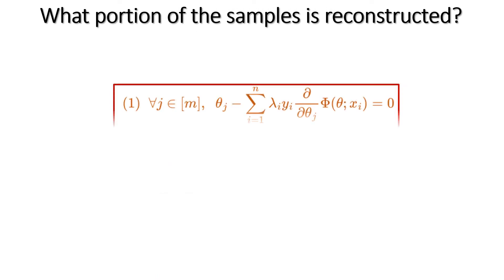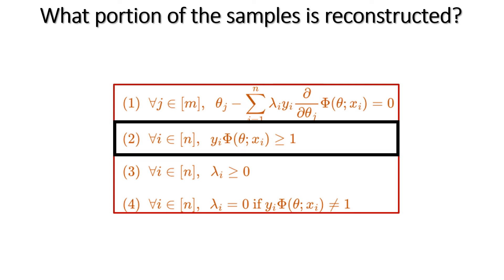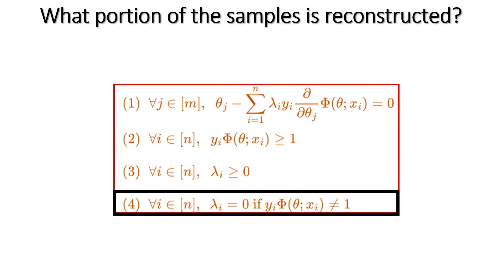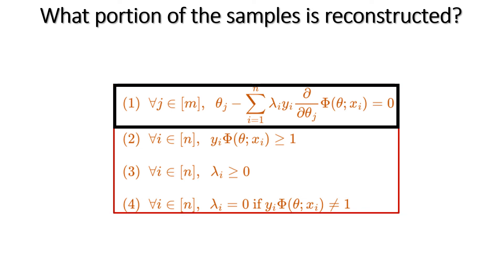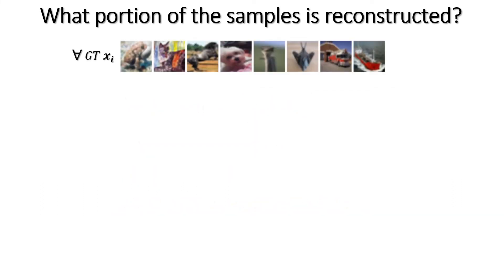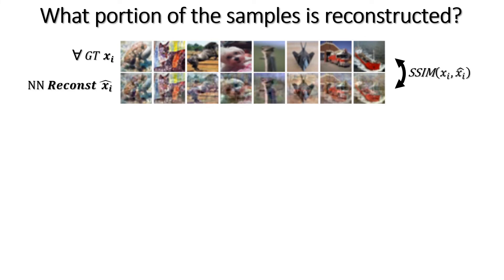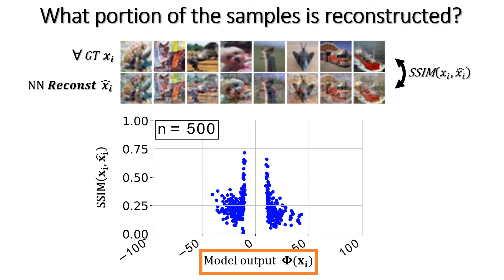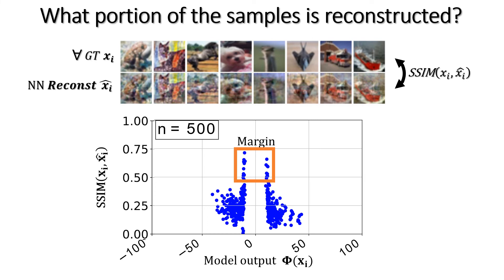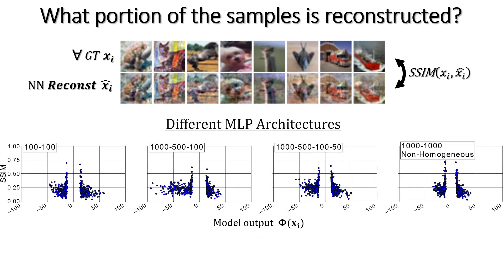A nice analysis of our scheme shows the relation of our reconstructions to the theoretical framework. From equation 2, all training samples should lie on the margin or further. From equation 4, lambda_i vanishes for samples that are away from the margin — meaning only data points on the margin participate in equation 1. Thus, we don't expect to reconstruct samples away from the margin. To visualize this, for each image in the training set we find its best reconstruction in terms of SSIM, then plot this score against the model output on that image. Higher SSIM means better reconstruction, and the further the model output is from zero, the further the sample is from the margin. We only reconstruct samples that lie on the margin, and there are also margin samples that were not reconstructed. We use these plots to show good reconstruction from various MLP architectures.